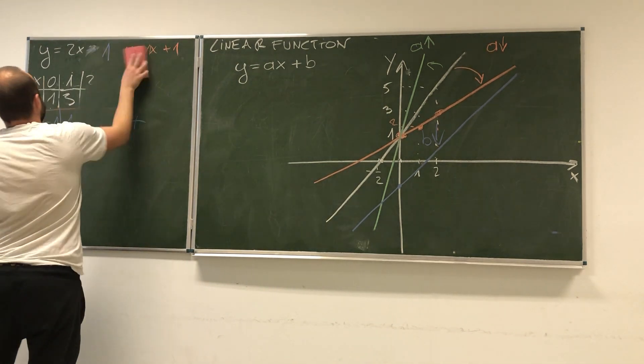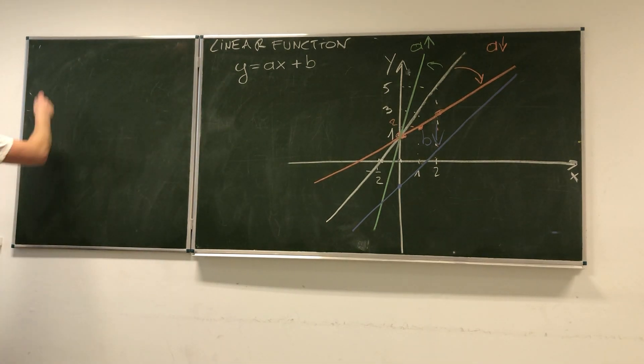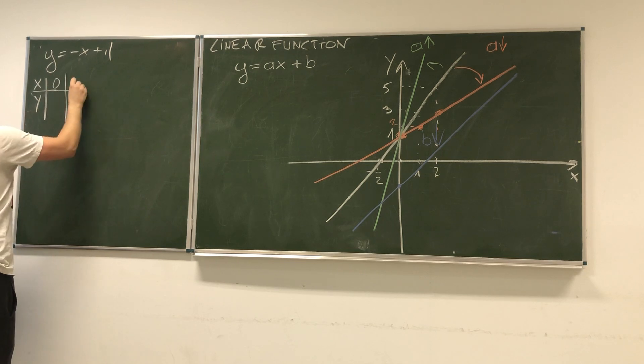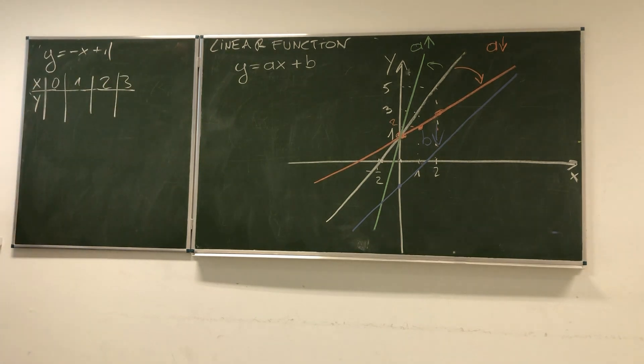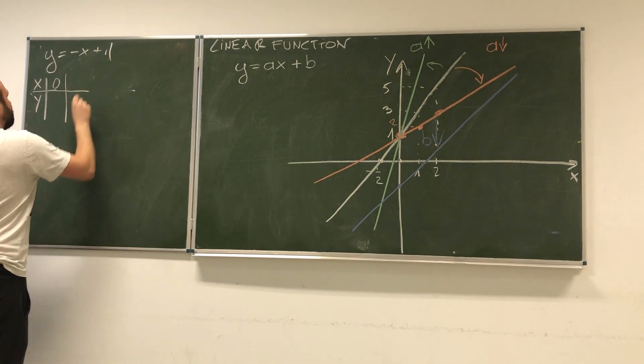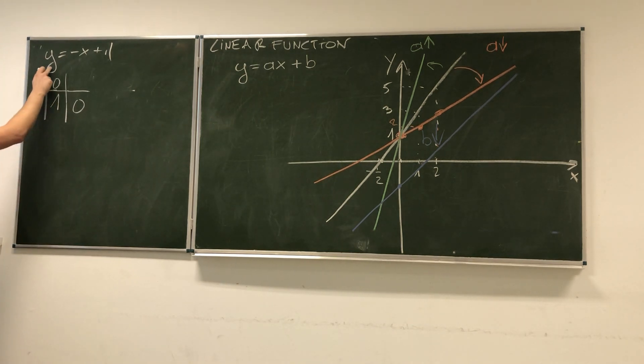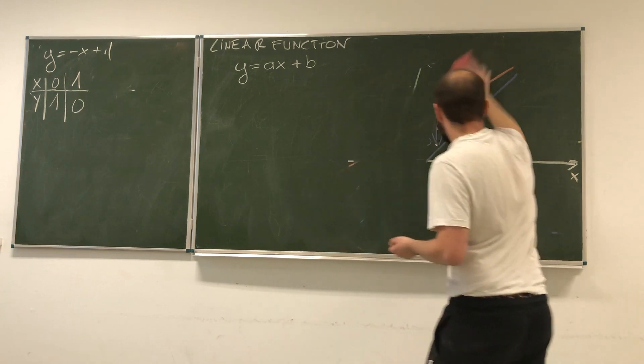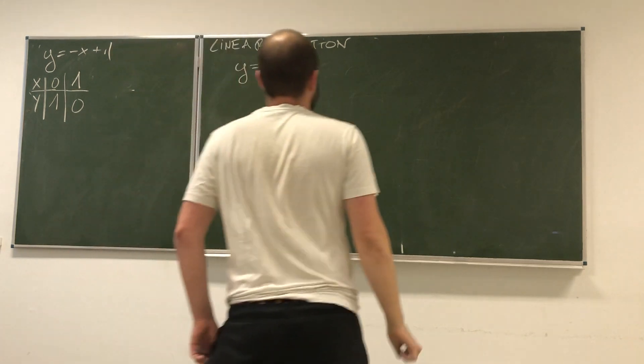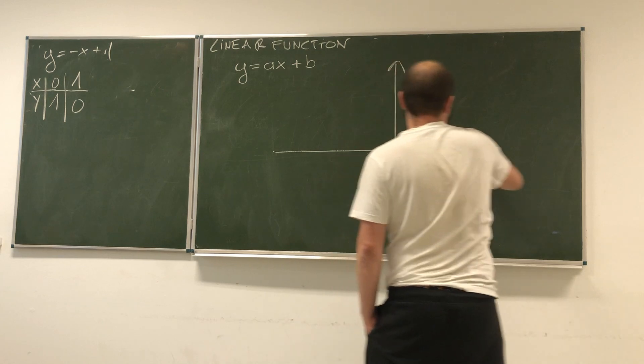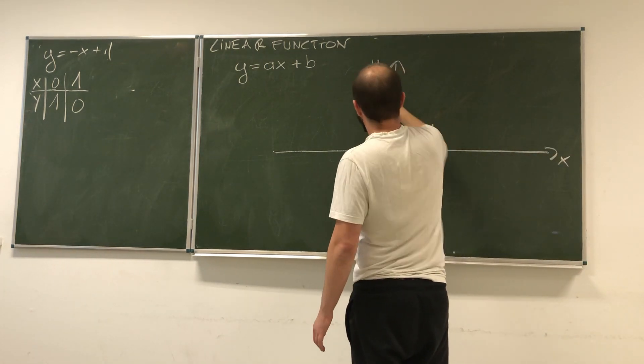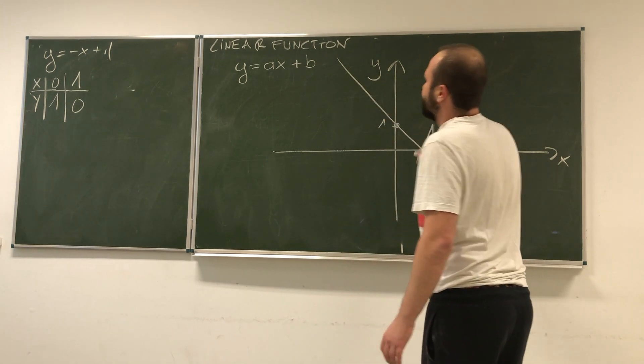Maybe one last example. What if we have negative coefficients? y equals negative x plus 1. Again, we can start with a table: x, y. If x is 0, y is 1. If y is 0, x is 1 as well. If I draw this function, it's going to look like this: 1, 1, and connecting those two points gives us this linear function.